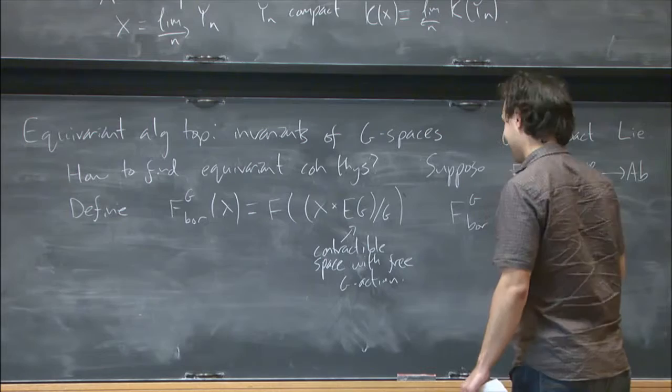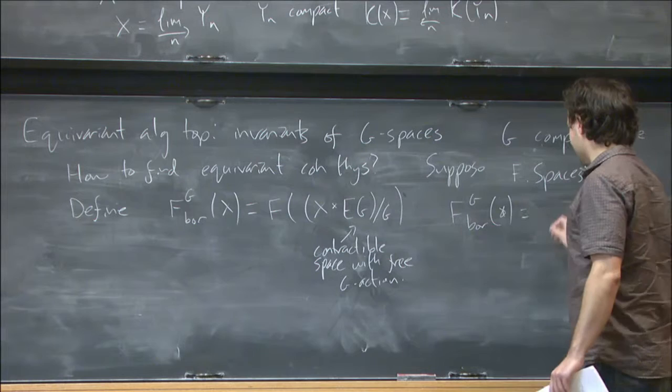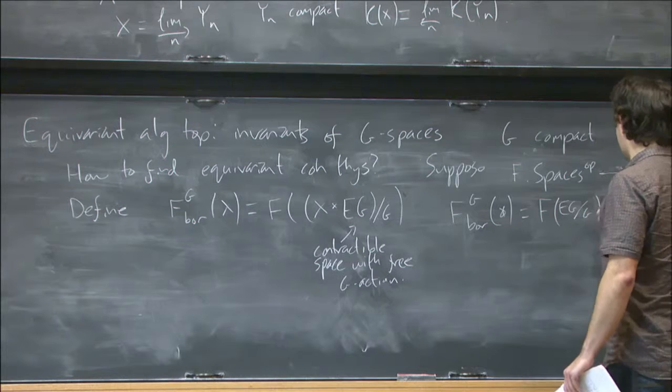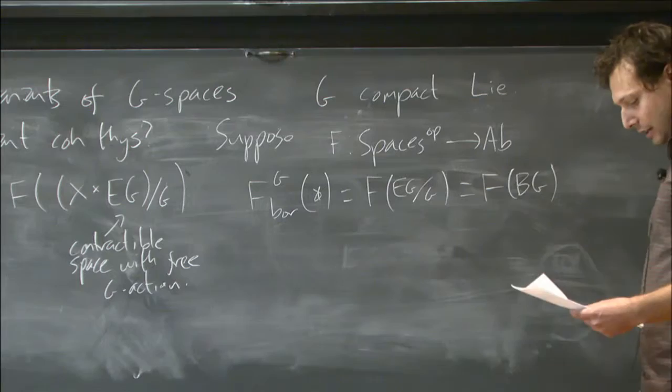So because F is homotopy invariant, it doesn't matter which one of those I pick, it's unique up to equivariant homotopy. And for instance, if I take the Borel equivariant F-cohomology of a point, well, that's just the F-cohomology of EG mod G, which is the F-cohomology of BG, the classifying space of G.